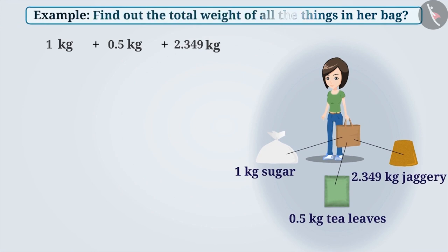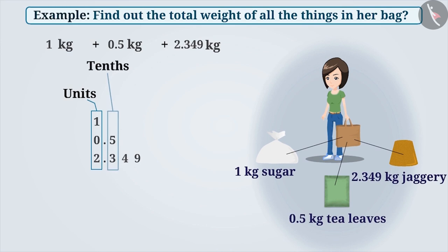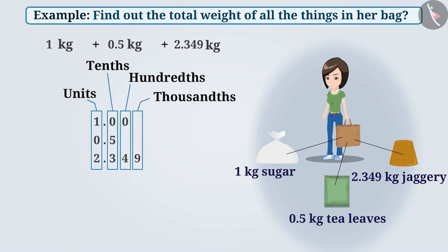So let's first write them one below the other. As you can see, the digits in the units place — that is 1, 0, and 2 — are one below the other in the same column. To make the number of digits equal after the decimal point in the first row, we will write 0 after 1 in the tenths place, 0 in the hundredths place, and one more 0 in the thousandths place. Similarly, in the second row after 0.5, we will write 0 in the hundredths and thousandths places. Now the number of digits after the decimal point are equal.